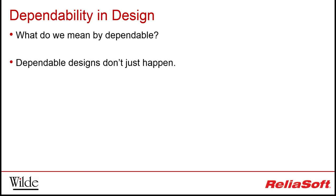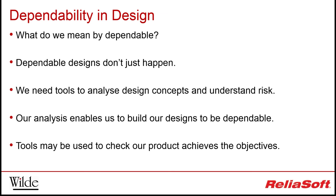What do we mean exactly by dependable designs? Dependability means that our design or system will achieve our objectives and requirements in terms of reliability, availability, maintainability and safety. The emphasis varies significantly from application to application — some designs need to be very safe, others very reliable, whereas some need to be highly available or easily maintainable, and some will require all of those things. This may cost a great deal of time and effort, and dependable designs don't just happen.